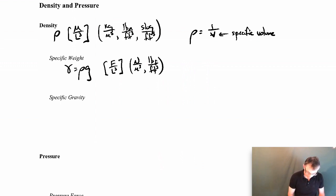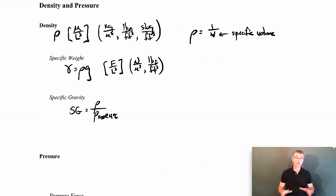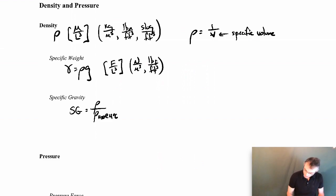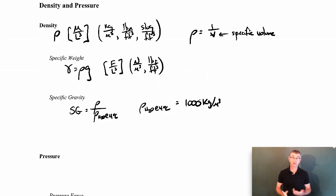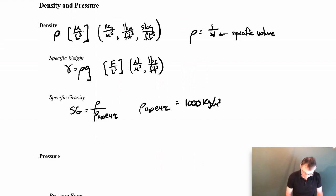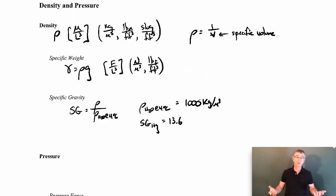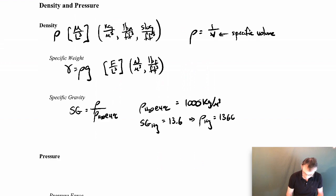Specific gravity is another concept that may be new to you. We give it the symbol SG, and it's the density of a fluid divided by the density of water at four degrees Celsius. It's a dimensionless ratio telling you how dense your fluid is relative to water. Water at 4°C has a density of exactly 1000 kg/m³ — a nice round number worth remembering. For example, mercury has a specific gravity of 13.6, meaning it's 13.6 times as dense as water, so its density is 13,600 kg/m³.